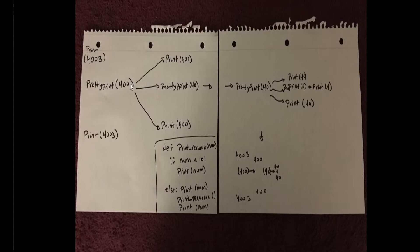So pretty print 400 puts 400 into the function. Since 400 is not less than 10, we do the else case: print 400, start the recursion, and print 400 again. But this time the recursive call uses 400 divided by 10, which is 40. So the outcome of pretty print 400 is: print 400, then pretty print 40, then print 400.